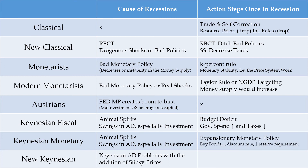Keynesian activist monetary policy advocates say that if we're in a recession, the action step is to engage in expansionary monetary policy. There are lots of different ways that the Federal Reserve can do this. A couple of important ways to note here are that we would have the Fed buy bonds, drop the discount rate, or drop the reserve requirements. All of these policy levers by the Fed represent expansionary monetary policy — they put money into the economy and into the hands of individuals.